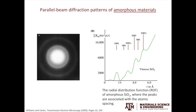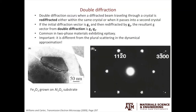Moving on to amorphous materials: you can also get diffraction information from amorphous materials — you see diffuse rings. You do not see diffraction spots because there is no long-range order, but you do see diffuse rings because there is short-range order. The graph on the right shows the radial distribution function of amorphous silica; the positions of the rings are not random and correspond to the atomic spacings for silicon-silicon, silicon-oxygen, and oxygen-oxygen.